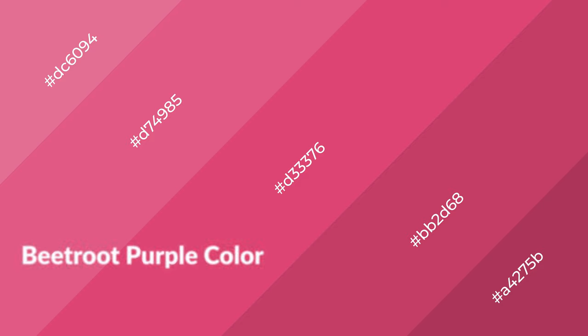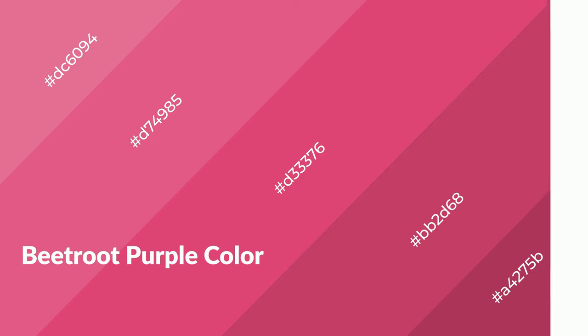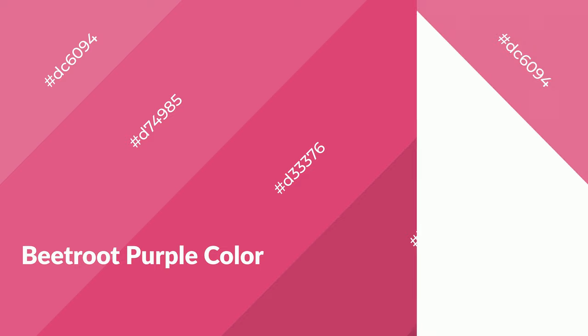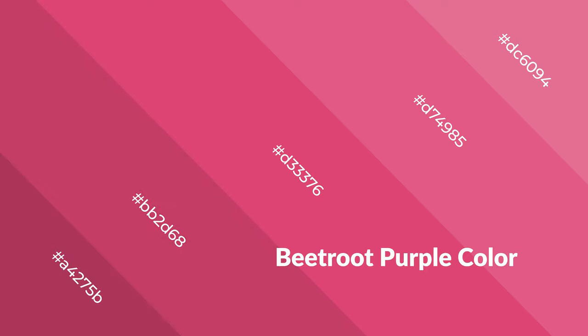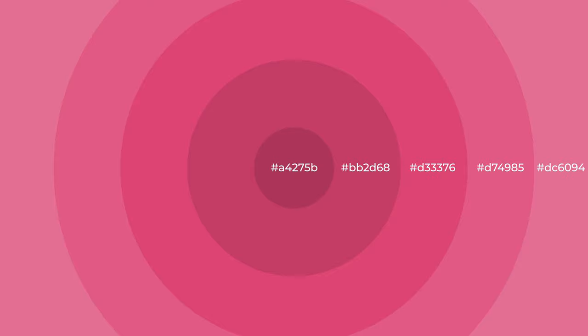Beetroot purple is a warm color and it emits cozier and active emotions. Warm colors are symbols of warmth, fire, heat, and sunshine. It also evokes joy, passion, love, and even anger. You can see them used in restaurants and gyms.